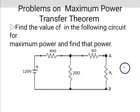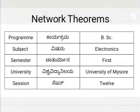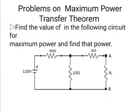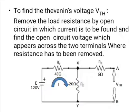So this is the given network. To find the VTH, remove the load resistance by open circuit, in which the current is to be found, and find the open circuit voltage which appears across the two terminals where the resistance has to be found.